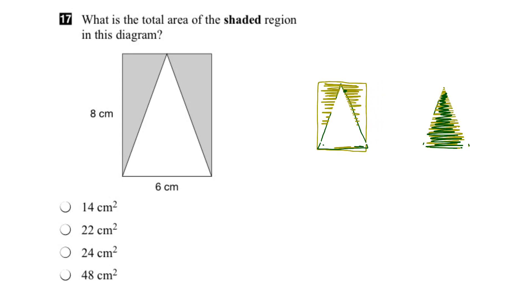So, our shaded region is equal to the rectangle minus the triangle.